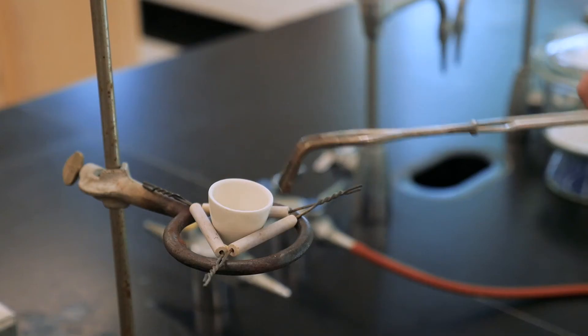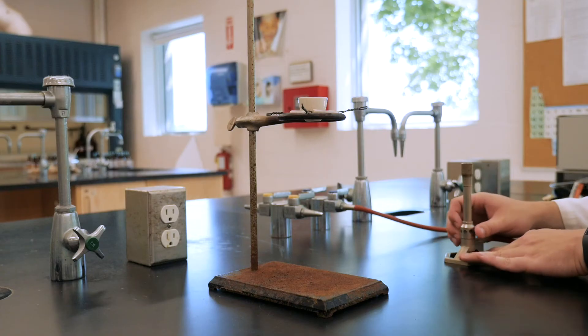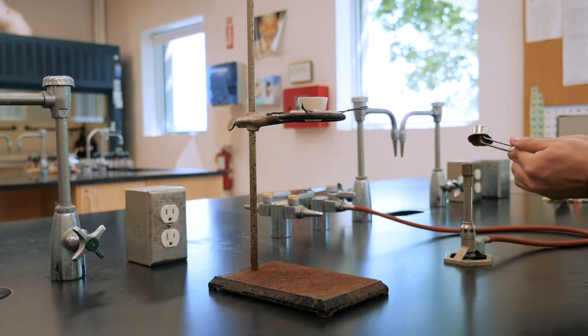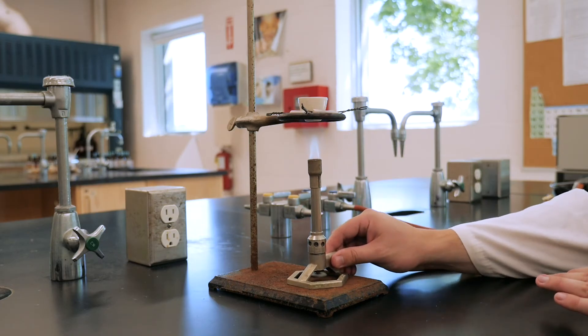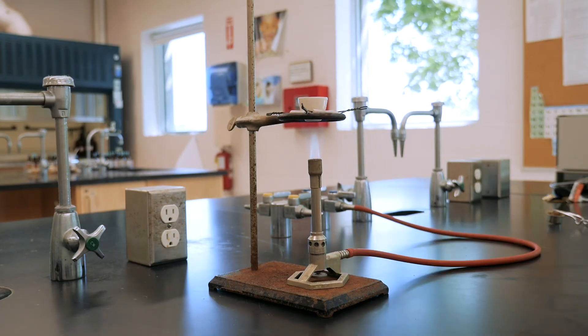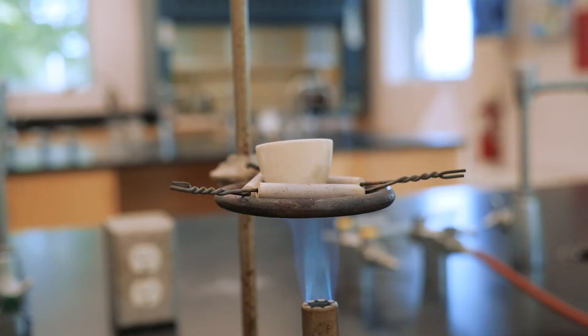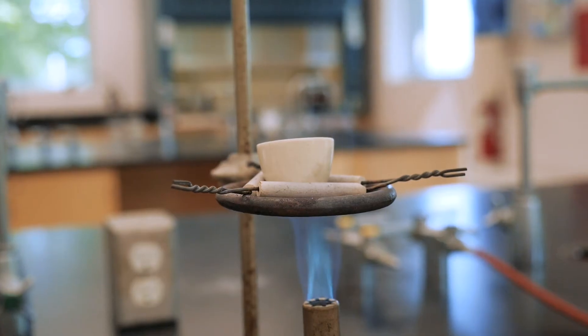Using tongs, place a crucible on a clay triangle and heat it by passing the flame of a Bunsen burner over all its surface, gently at first, and then beneath the crucible with the full flame for about 10 minutes. By doing this, you're trying to remove any atmospheric water molecules that might be adhered to the surface of the crucible itself. We'd like to make a very precise measurement, and so even the crucible has to be perfectly dry.